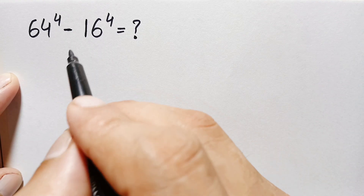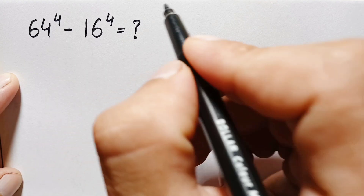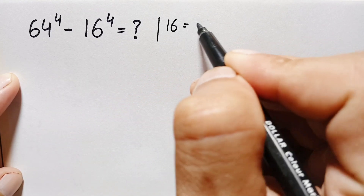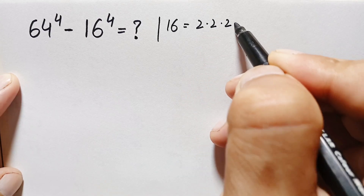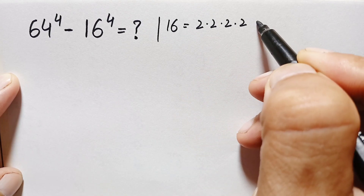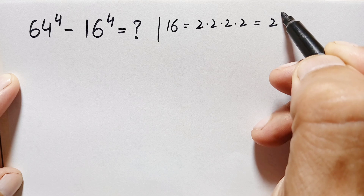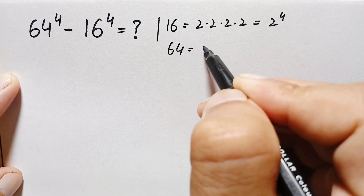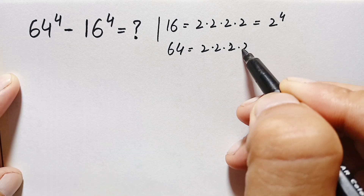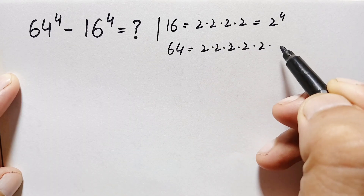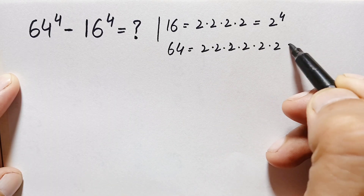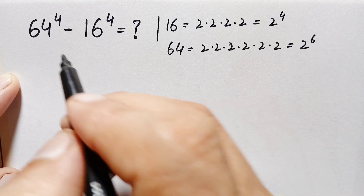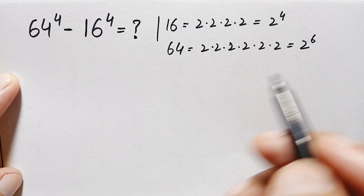First of all, we can write these two bases differently. 16 can be written as 2×2=4, 4×2=8, 8×2=16, so 16 = 2^4. And 64 can be written as 2×2=4, 4×2=8, 8×2=16, 16×2=32, 32×2=64, so 2 is multiplied 6 times, meaning 64 = 2^6.